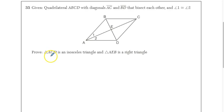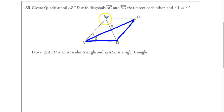It tells us to prove two things. We want to prove that triangle ACD is isosceles, and we want to prove that triangle AEB is a right triangle. Let's take care of this one step at a time.